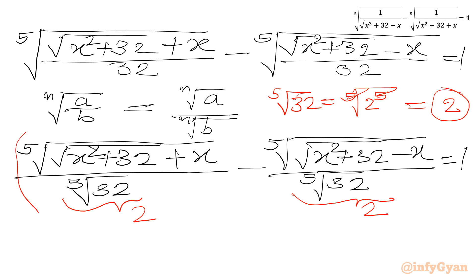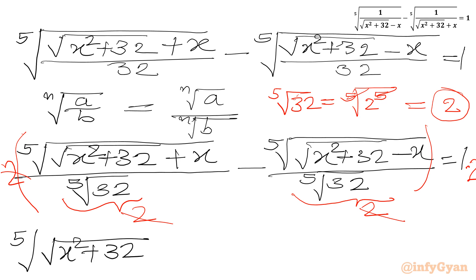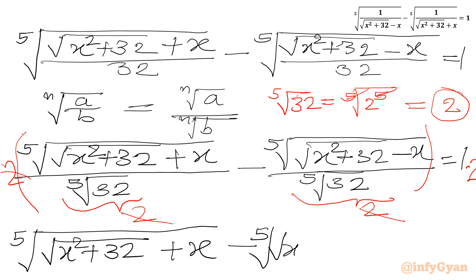Now multiply both sides by 2. On the left side, we can cancel each denominator 2. So our equation becomes: fifth root of (square root of x squared plus 32 plus x) minus fifth root of (square root of x squared plus 32 minus x), equal to 1 times 2, which is 2.